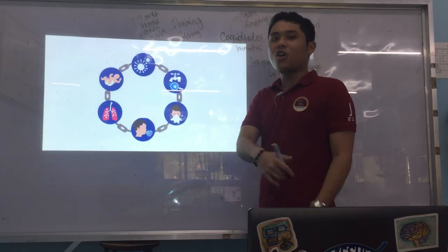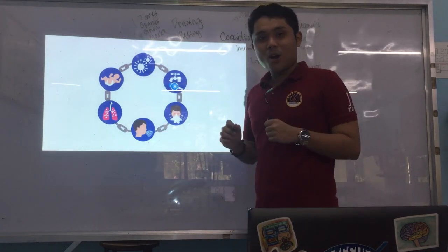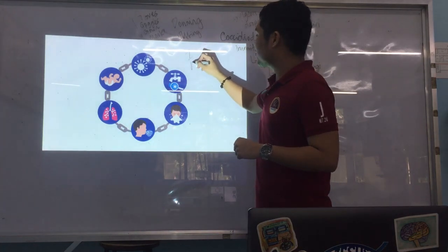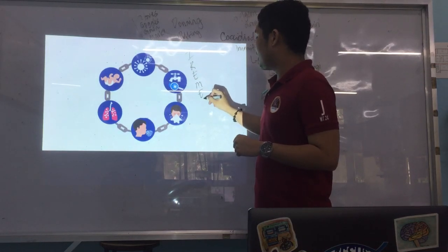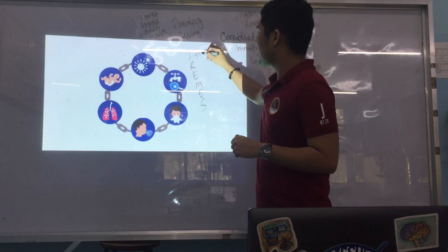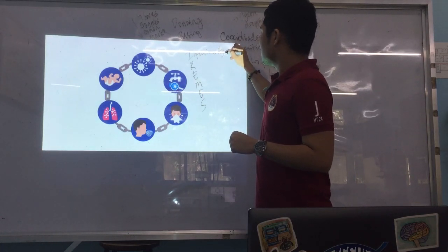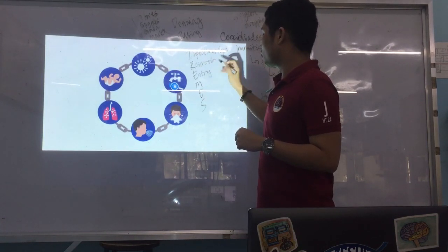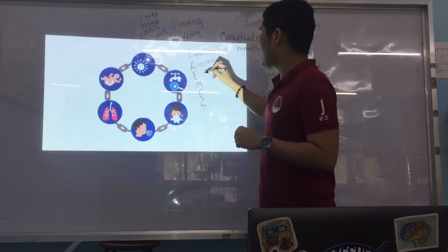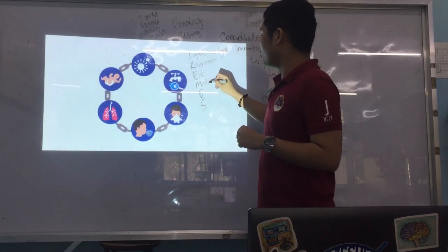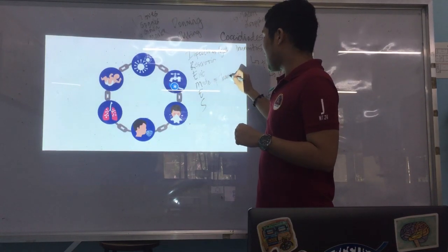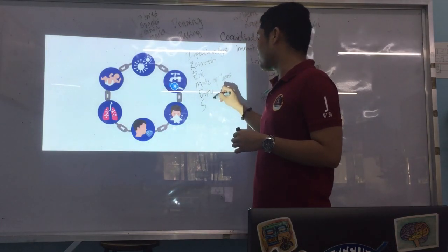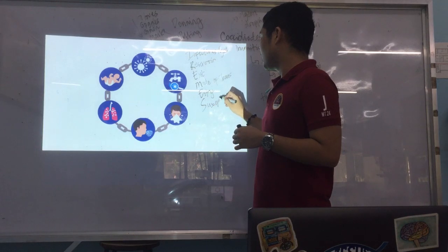Next is the chain of infection, which also appears on board exams. The mnemonic to remember the components is IREMES: I is for infectious agent, R is for reservoir, E is portal of exit, M is mode of transmission, E is portal of entry, and S is susceptible host. The portal of exit and portal of entry can be the same — for example, the mouth, the nose, or the bloodstream.